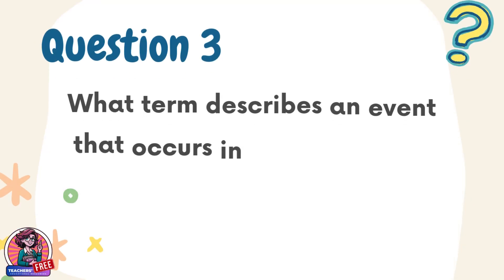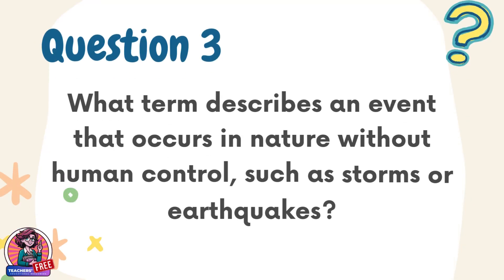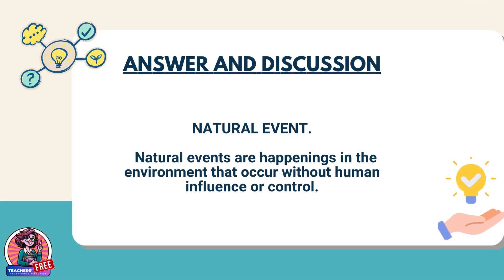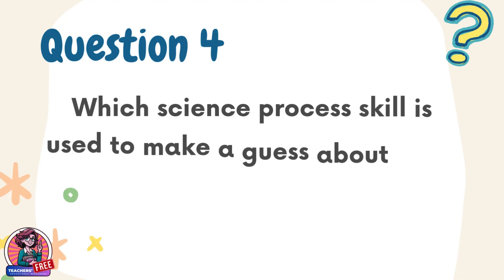Question 3. What term describes an event that occurs in nature without human control, such as storms or earthquakes? Answer: Natural event. Natural events are happenings in the environment that occur without human influence or control.